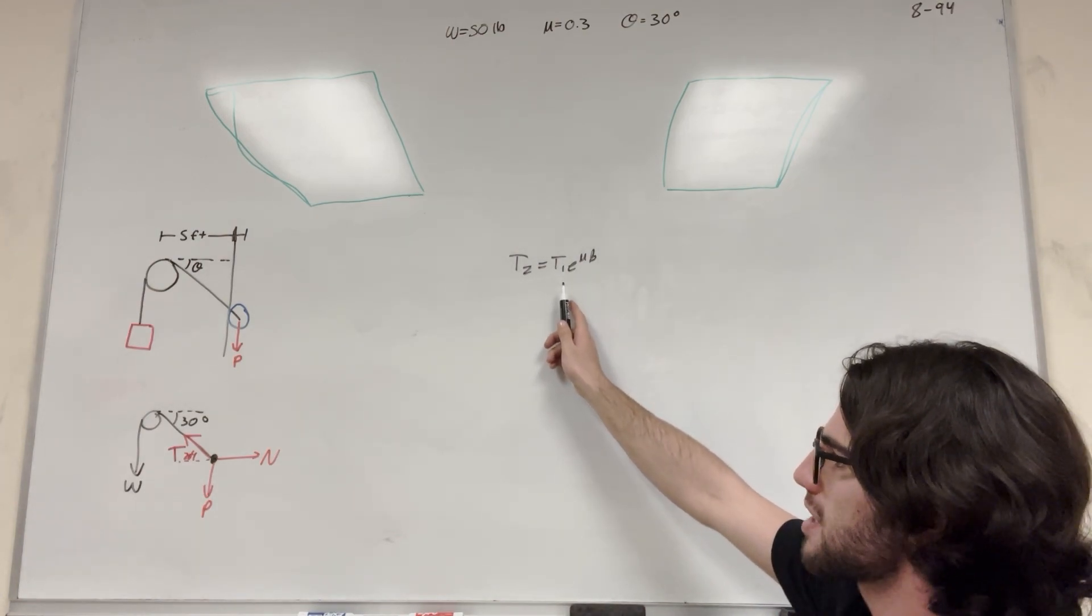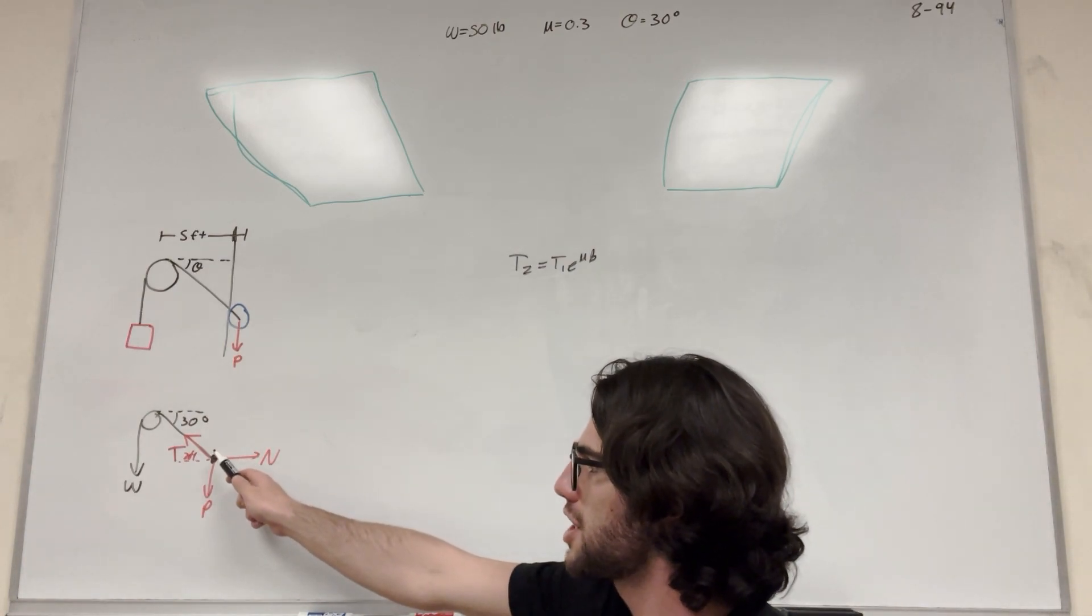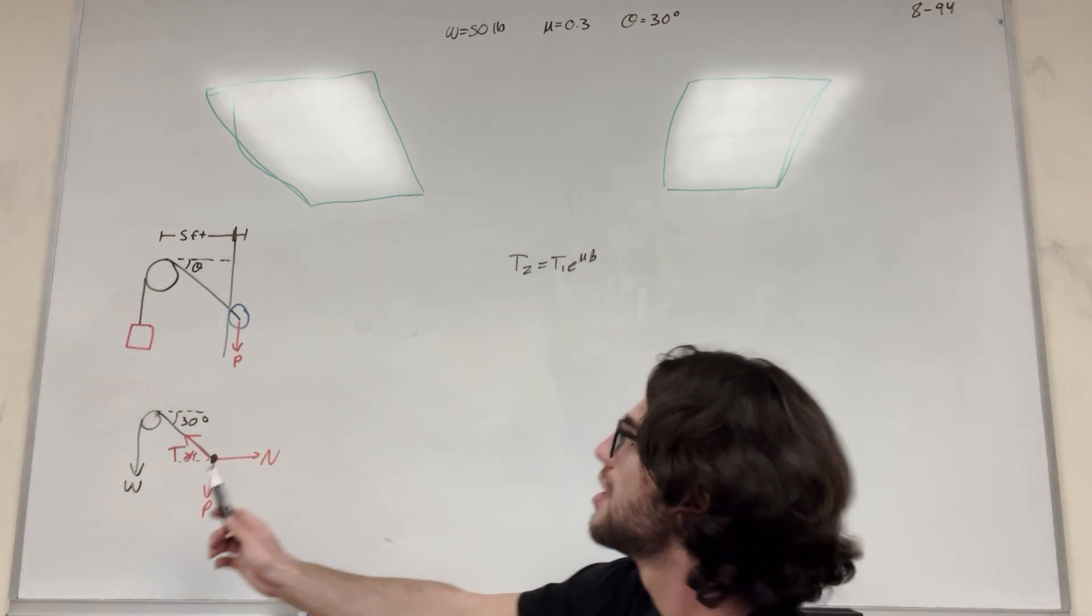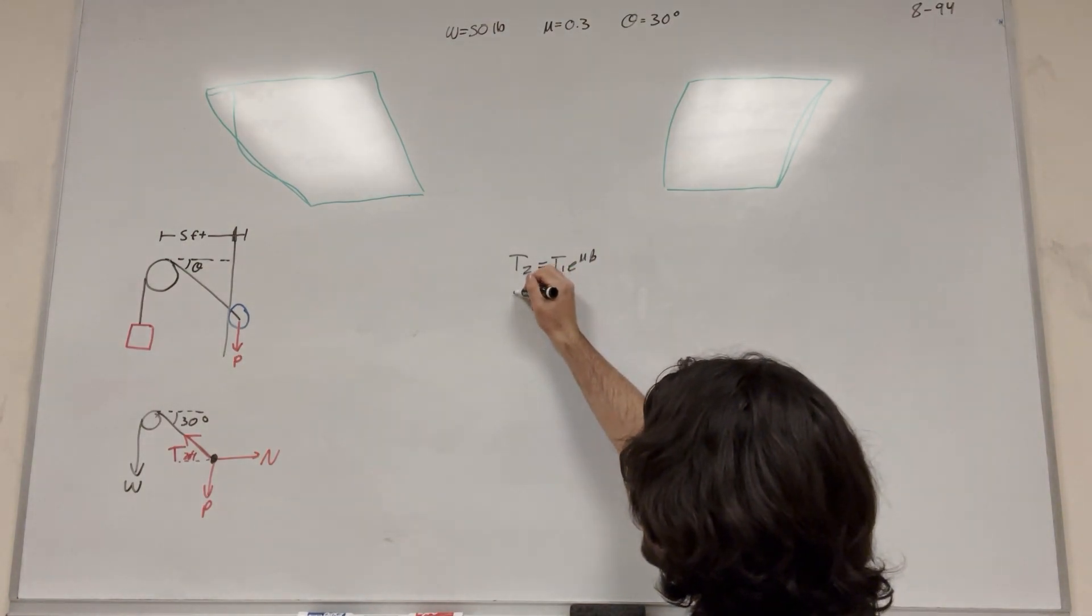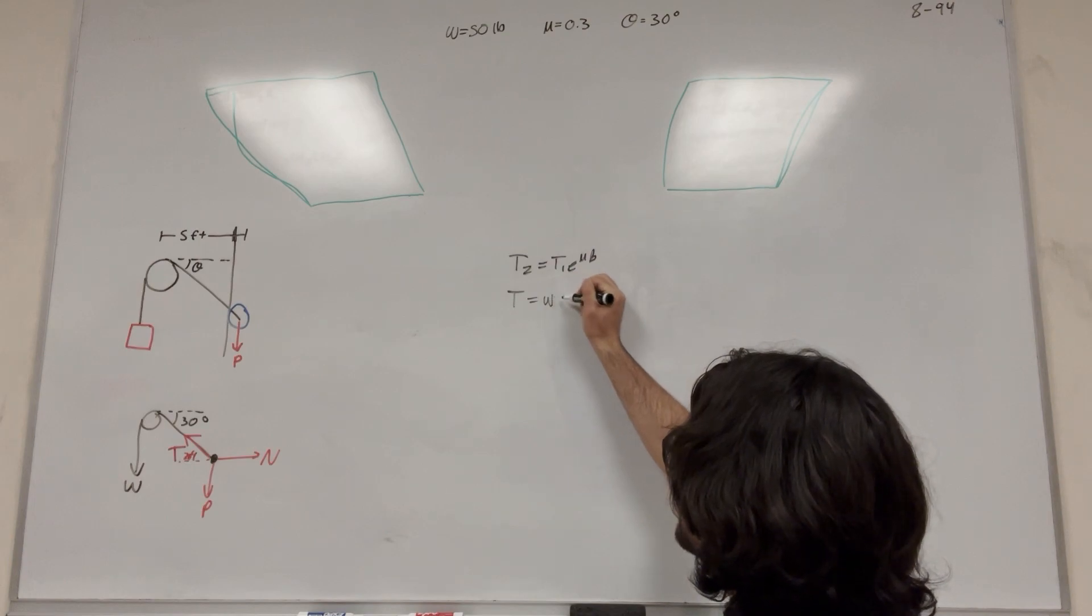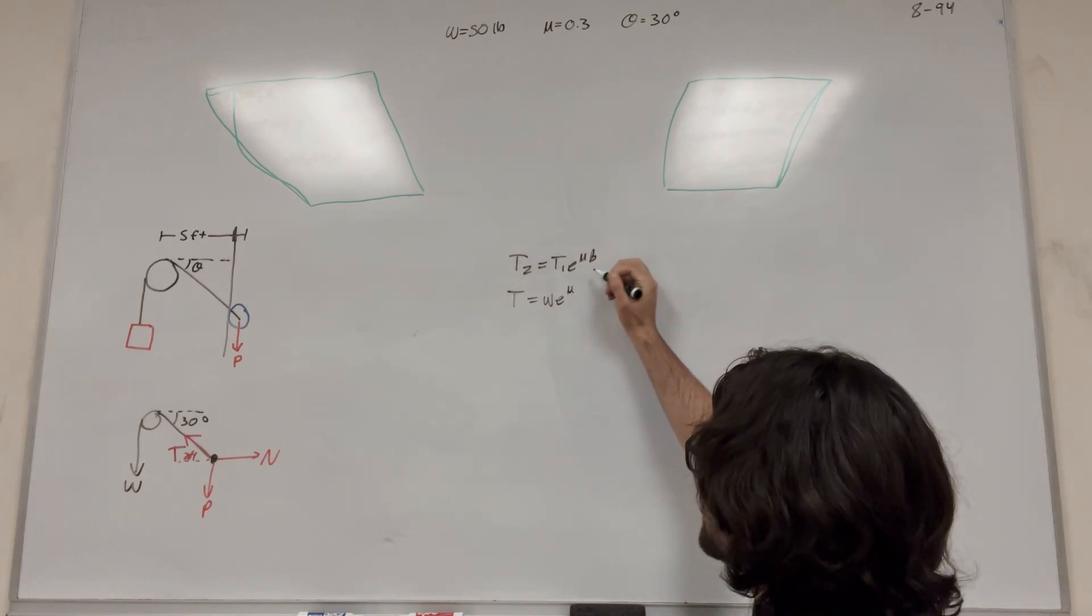So if we're looking for maximum force, that means that tension is going to be greater than weight here. So that means that our greater force is going to be over here. So it's going to look like tension is equal to weight E to the coefficient of static friction beta.